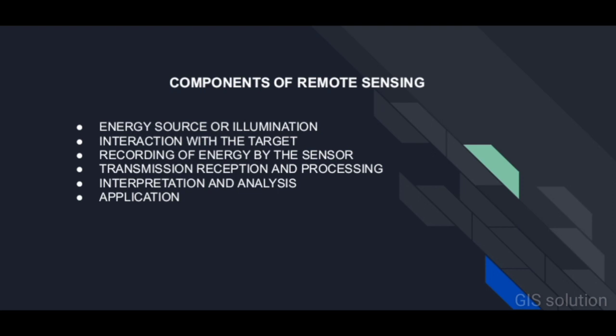Next is transmission, reception, and processing. The energy recorded by the sensor has to be transmitted, often in electronic form, to a receiving and processing station where the data are processed into an image. The image is then interpreted visually and digitally or electronically to extract information about the target which was illuminated.